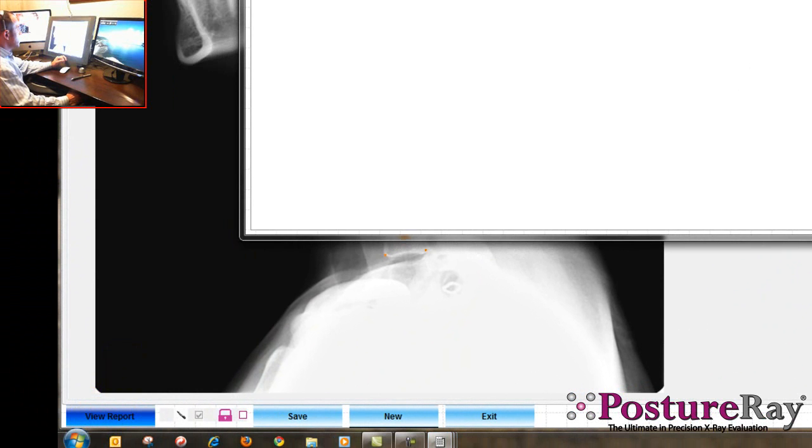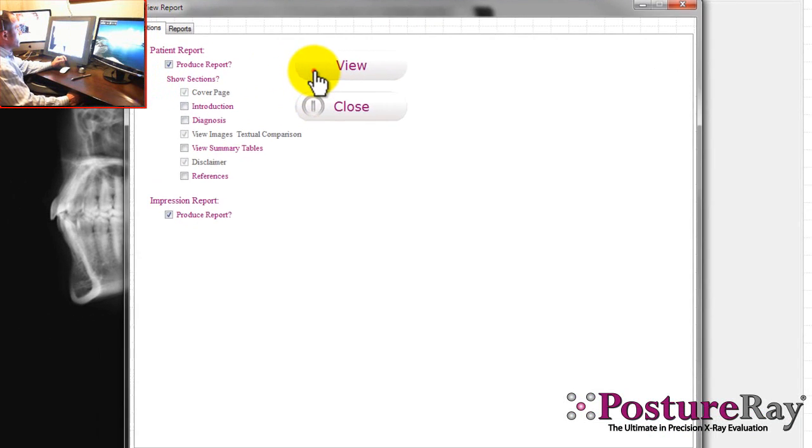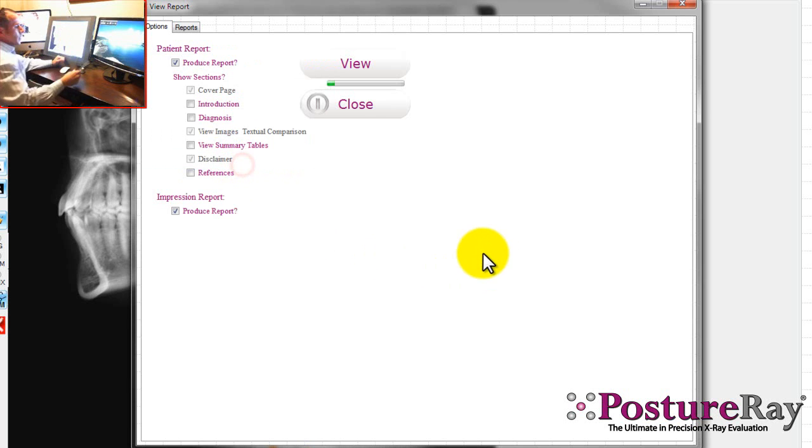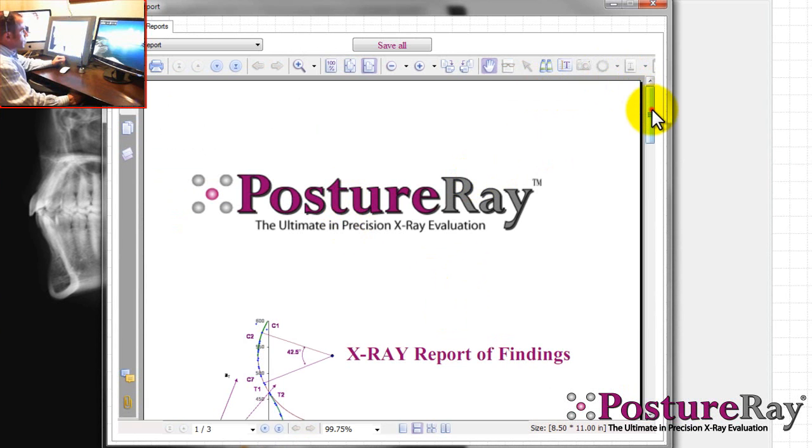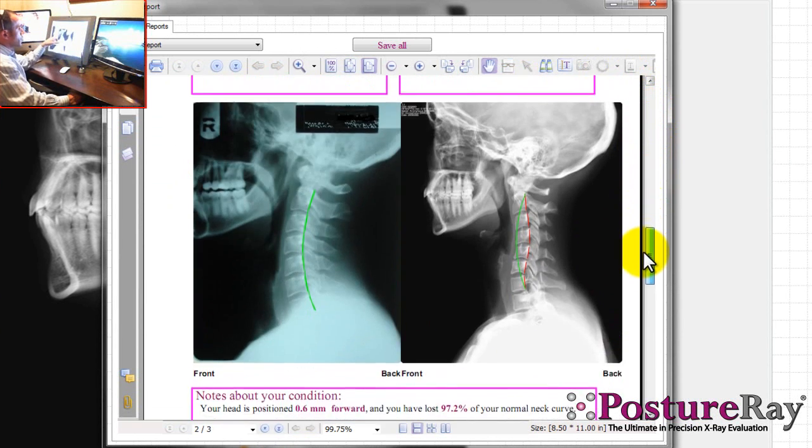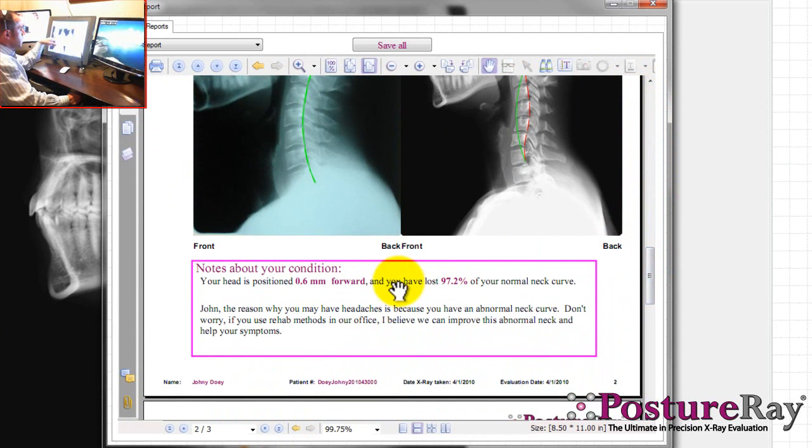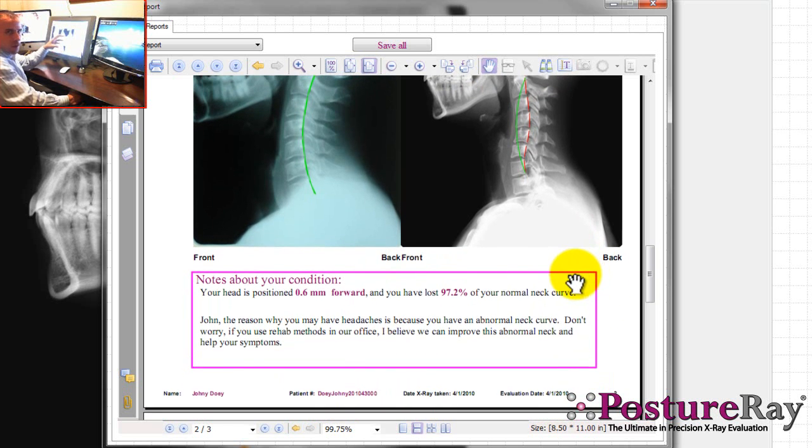Let me show you. With what we just did, I'm going to generate the report. After I sign, I'm going to sign the report, hit save, and now generate the report. Right then and there, I've just digitized one x-ray view. You can see normal versus the patient, and it automatically calculates for the patient. Your head is positioned six-tenths of a millimeter forward. You've lost approximately 97.2% of your normal neck curve. That's compared to ideal. Obviously we have a normal average range, but we chose to use ideal. Here's the note I put in for the patient.